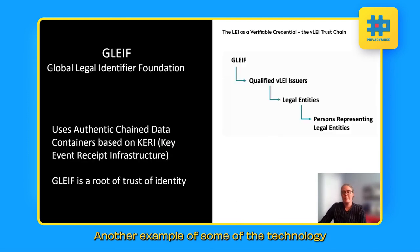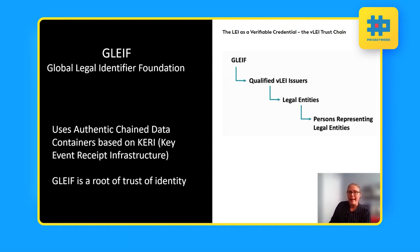Another example of some of the technology being used right now is that of GLEIF, Global Legal Identifier Foundation. So they are using authentic chained data containers based on KERI. And in this example, GLEIF is a root of trust for identity. So these are after the 2008 financial crisis, GLEIF was an organization that was founded in order to give all business organizations identifiers to help make financial transactions more assured. So they are now setting up ways to do this with cryptographic verifiable LEIs, legal entity identifiers.